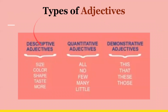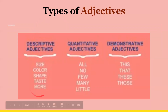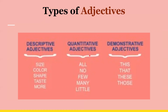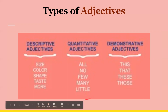And these are three types of adjectives. We have descriptive adjectives — some examples are the size, color, shape, taste, and all sorts of other words that you could use to describe. Then we have quantitative adjectives, which are numbers — so all, no, few, many, and little.